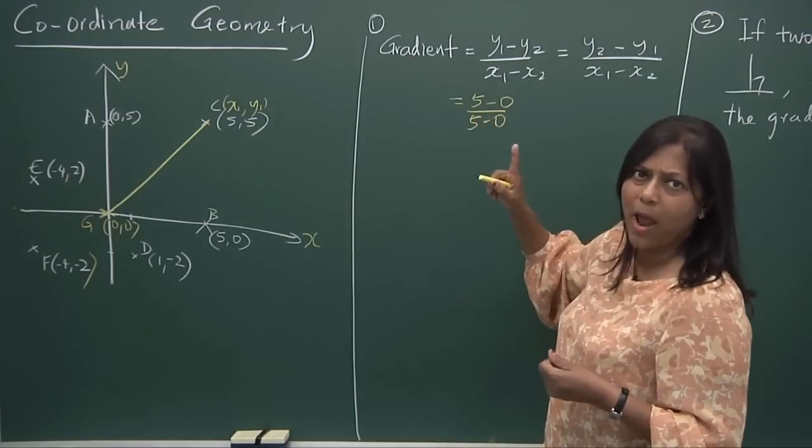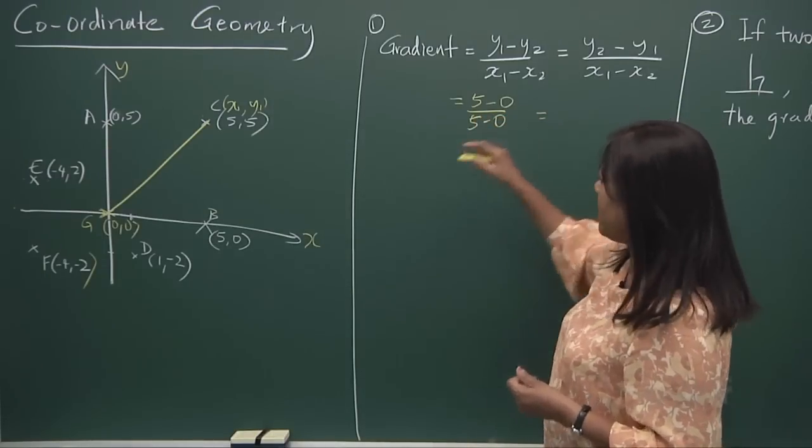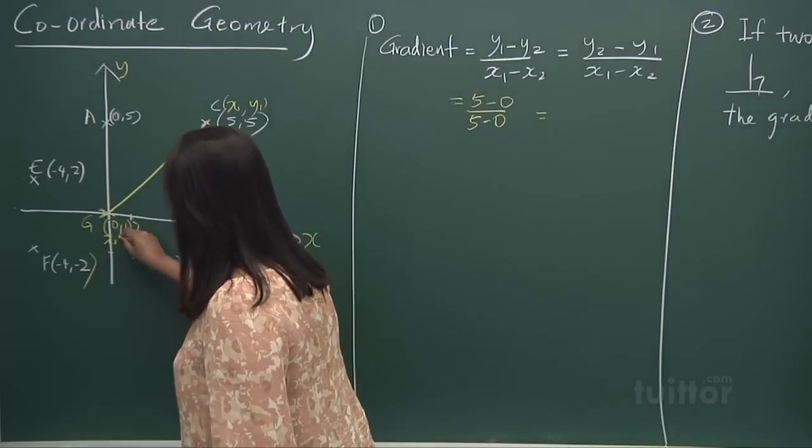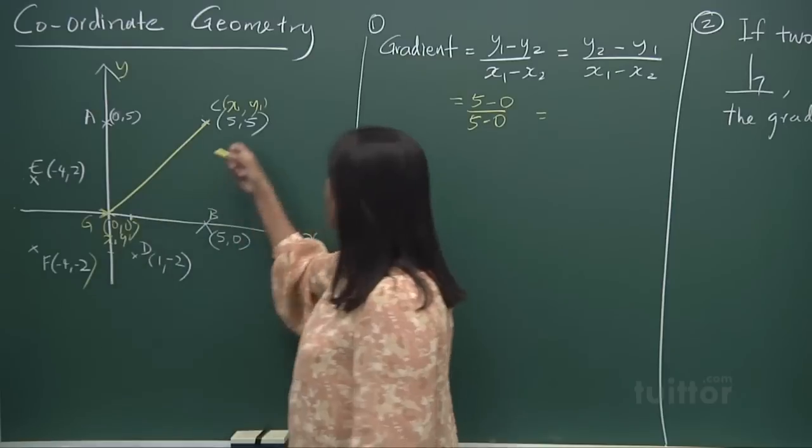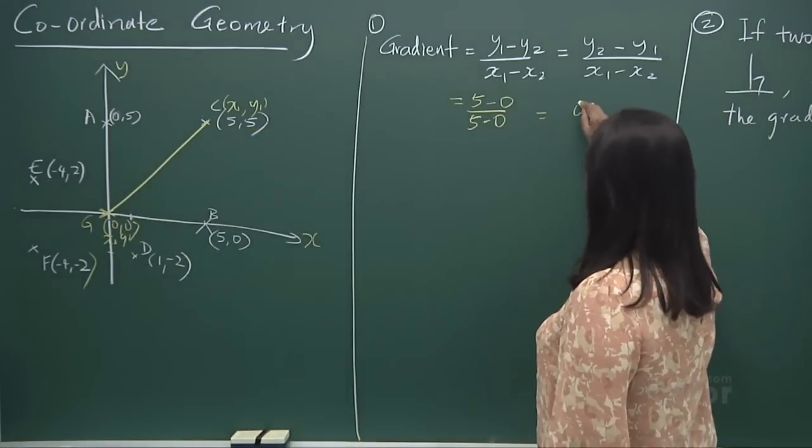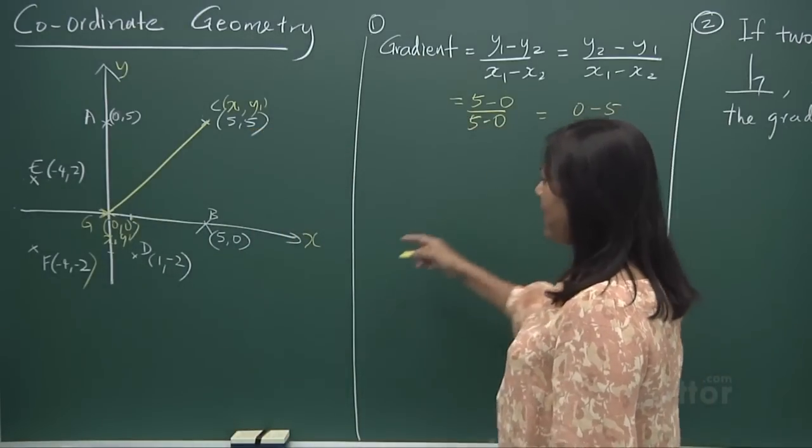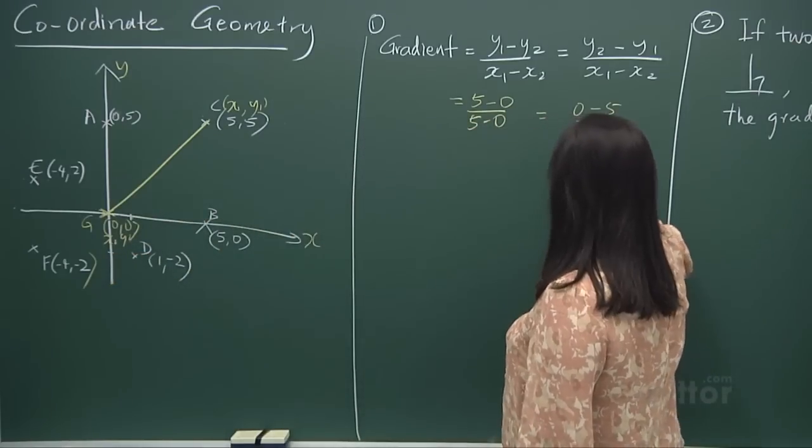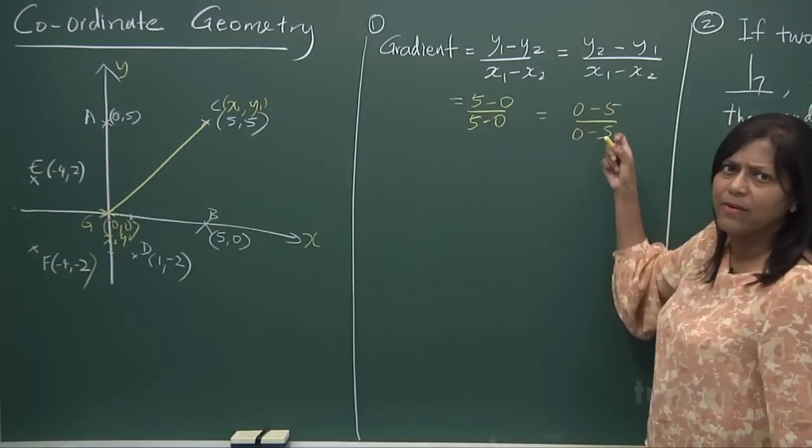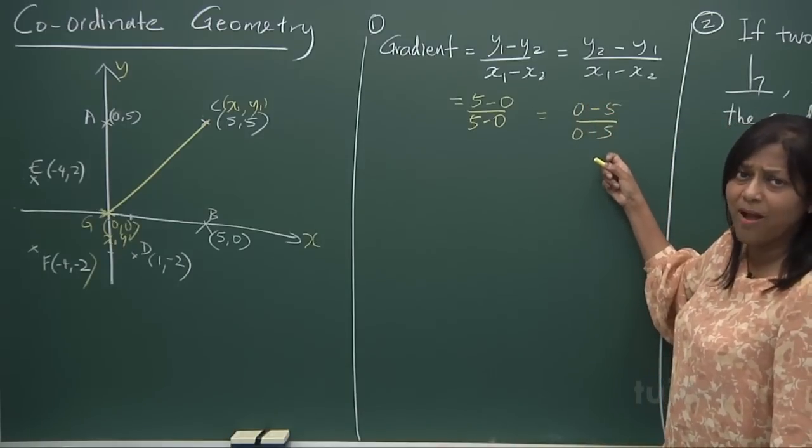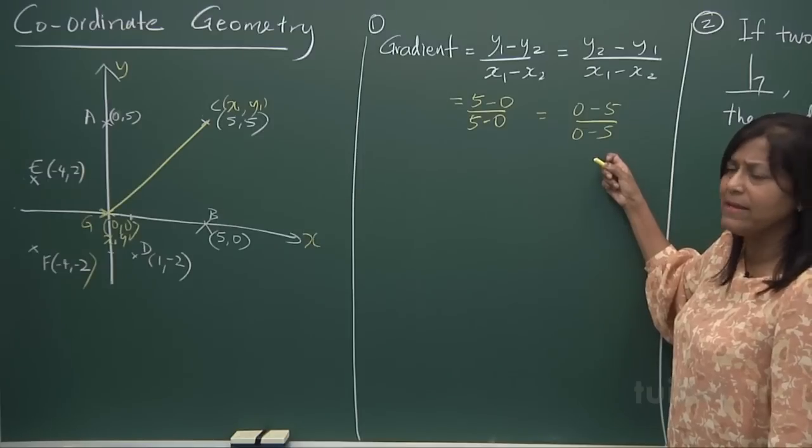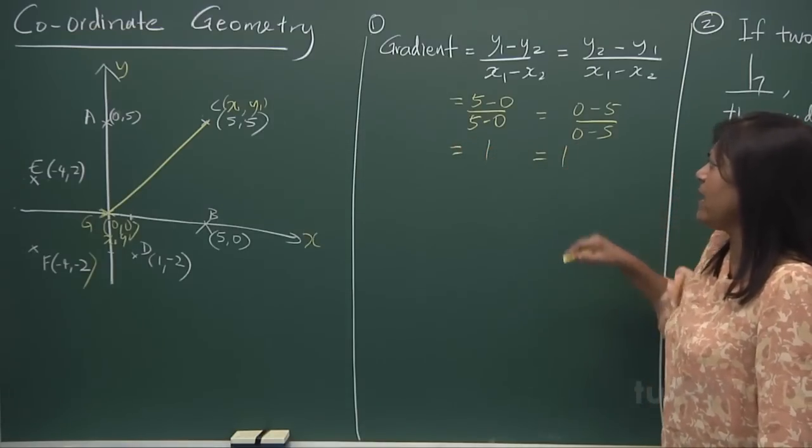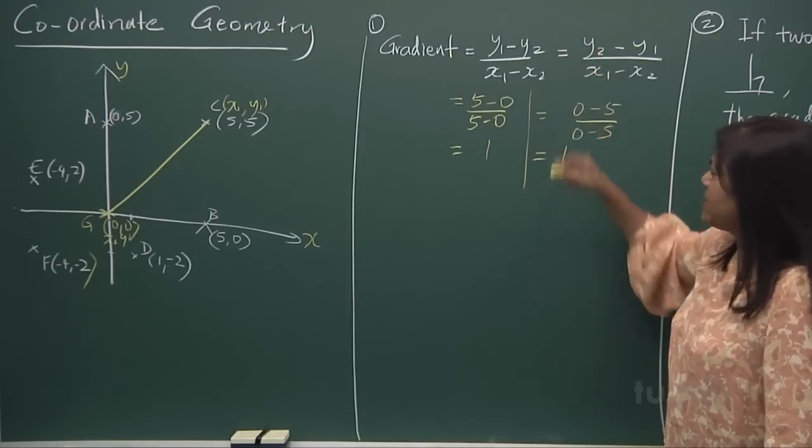We go back to that. You get a one. Or you can say, this is your Y2. X2, Y2. Zero minus a five. And if you get back again to X2. Zero minus a five. You get a minus five. Over a minus five. Minus divided by minus will be one. So in both cases, you get a one. In both cases.